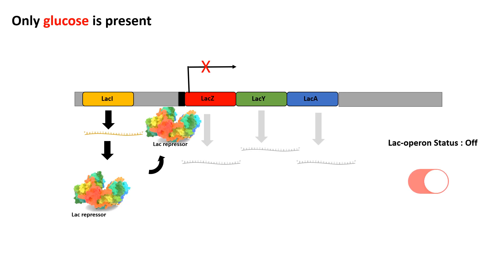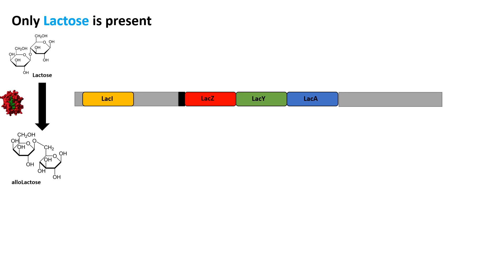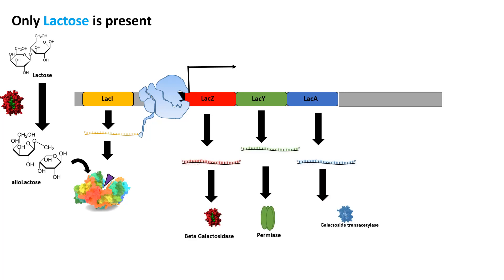Now consider a situation where only lactose is present and glucose is not available. Lactose entering the bacterial cell is converted to allolactose by the enzyme beta-galactosidase, the lacZ gene product. Allolactose inhibits the lac repressor, so the repressor cannot bind to the operator region. As a result, RNA polymerase can bind and transcribe the lac operon genes, producing beta-galactosidase, permease, and galactoside transacetylase — all the necessary lactose-metabolizing enzymes.